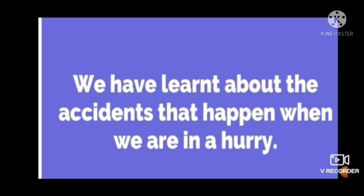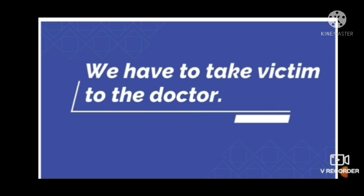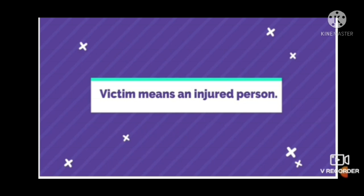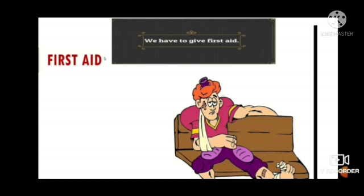We have learned that accidents happen if we are not careful or if we are in a hurry. So, if an accident takes place, what should we do? Yes, we should take the victim to the doctor. Victim means an injured person. In accidents, bleeding can occur — bleeding means the loss of blood. So we should give first aid in that condition.